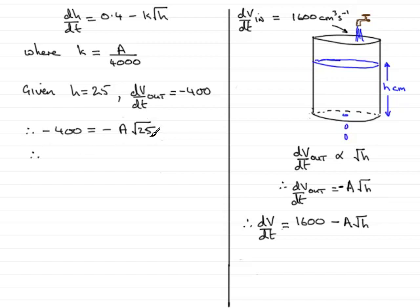So we know the square root of 25 is 5. And so dividing both sides by minus 5 would leave me with a equaling plus 80.